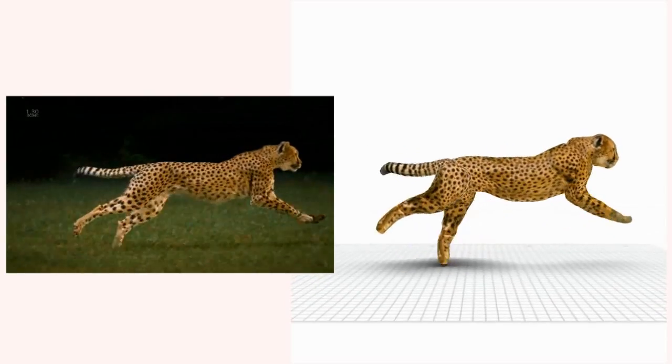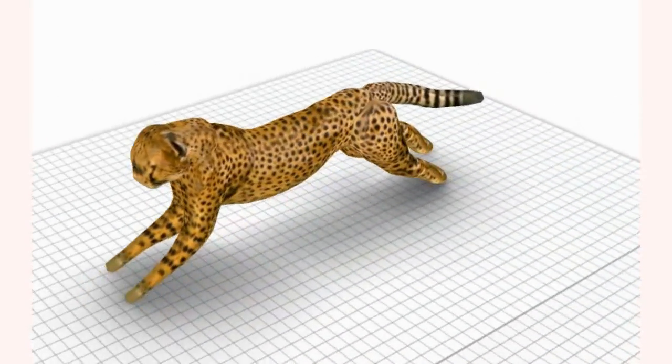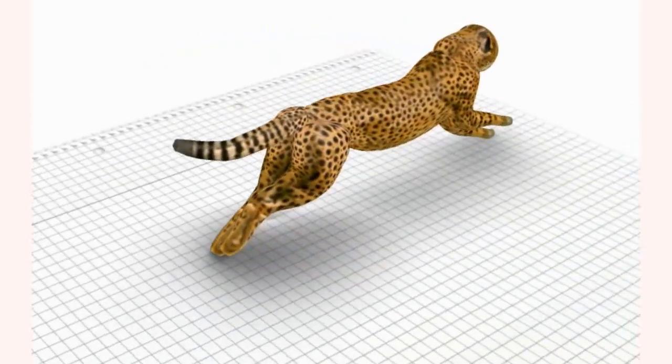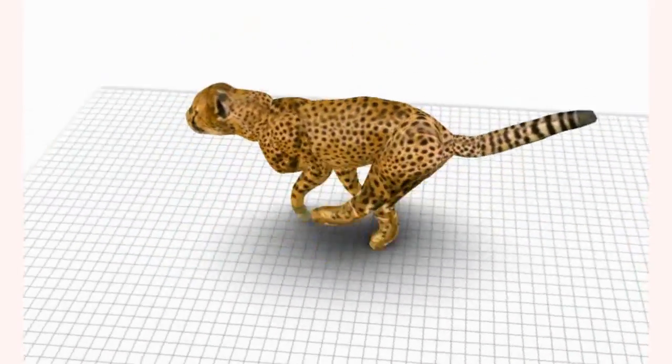Here, the animated 3D cheetah is shown next to the video from which it was created. Next, we show the static 3D shape. Here, the looped animated 3D shape from a novel view.